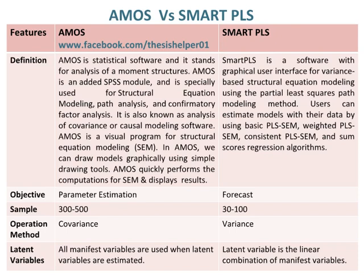The objective of AMOS is parameter estimation, whereas the objective of SMART PLS is forecast. The number of samples used in AMOS is 300 to 500, whereas the number of samples used in SMART PLS is 30 to 100.